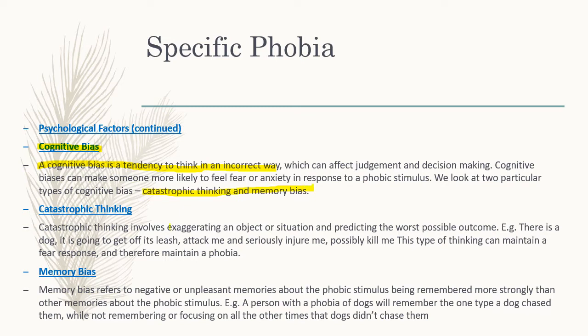Catastrophic thinking involves exaggerating an object or situation and predicting the worst possible outcome. For example, thinking you'll get stabbed by a needle and die, or that a spider will bite you and you'll die, or that smelling a flower will give you hay fever and you'll sneeze so much you'll die. It's always thinking about the absolute worst case scenario, and it maintains the phobia.